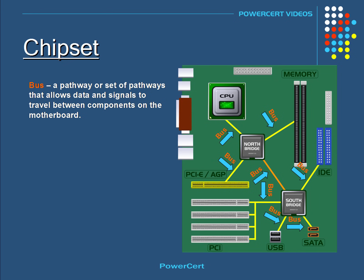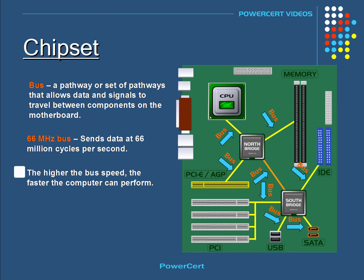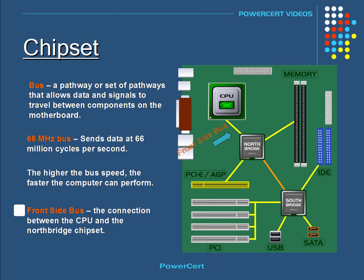For example, if a bus speed is said to operate at 66 MHz, then that particular bus can send data at 66 million cycles per second. The higher the bus speed, the faster the computer can send data, which improves the performance of the computer. A motherboard's bus speed generally refers to the speed of the front side bus, which is the connection between the CPU and the North Bridge chipset.